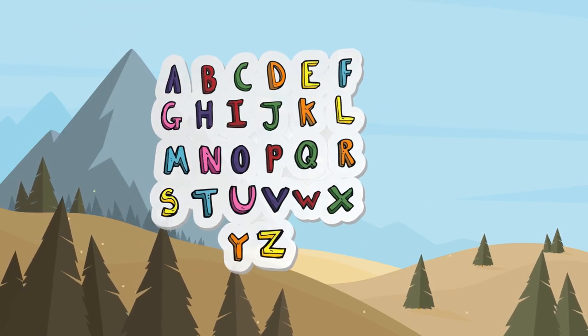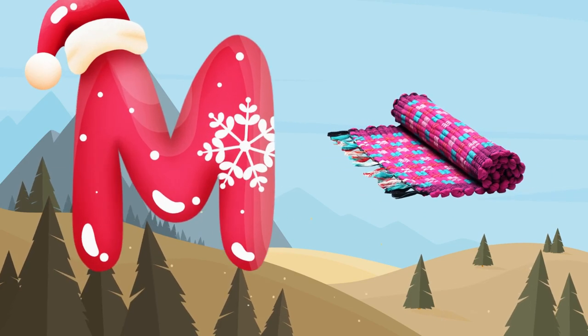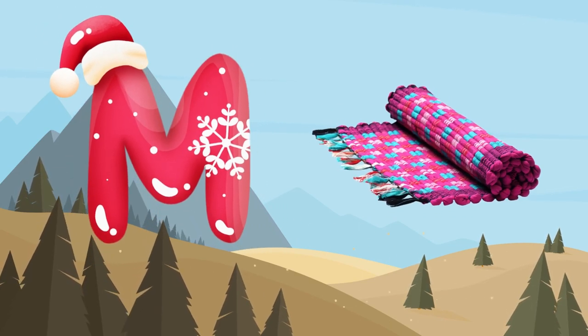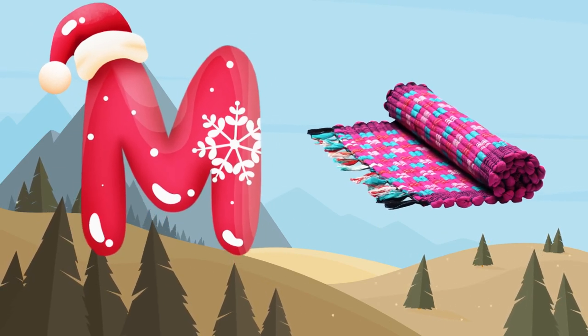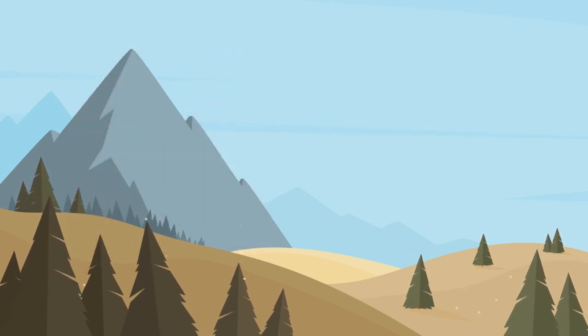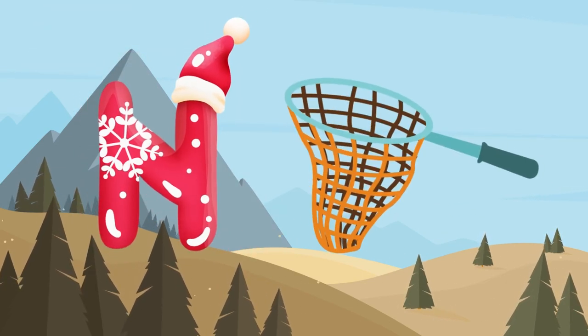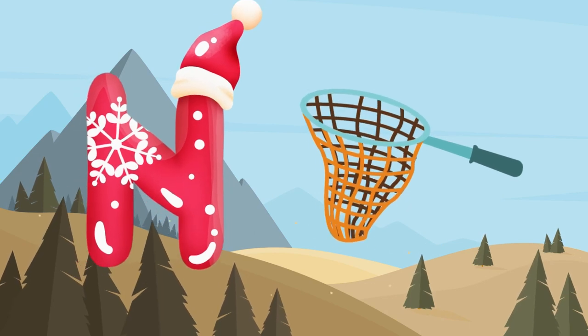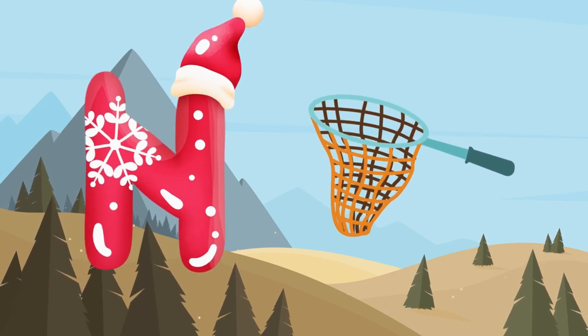M is for mat, m-m-mat. N is for net, n-n-net.